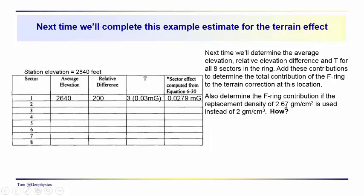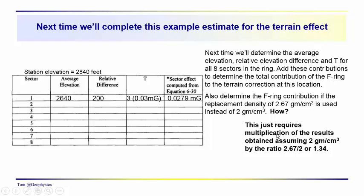And then we'll also correct for a density. Let's say we had a density of 2.7 grams per cubic centimeter, not 2 grams per cubic centimeter. So in a lot of areas, the bedrock might have an average density of about 2.67 grams per cubic centimeter. How would you do that? Well, it just requires that you multiply the result obtained assuming 2 grams per cubic centimeter by the ratio of 2.67 over 2 or 1.34.